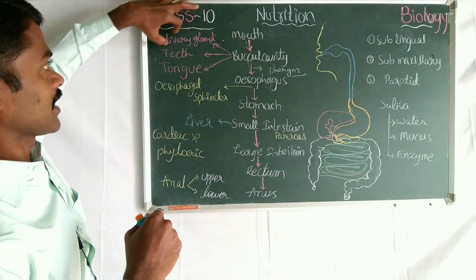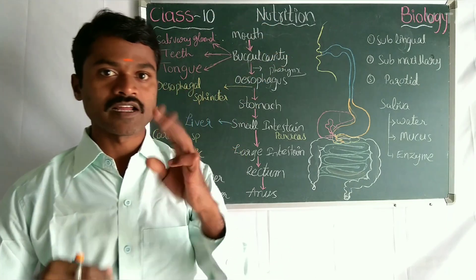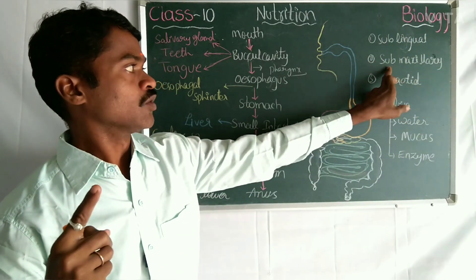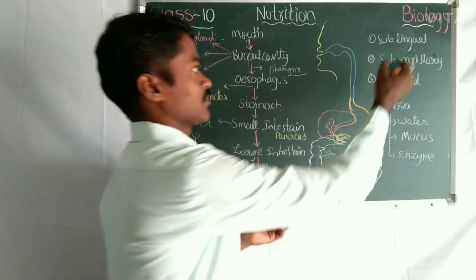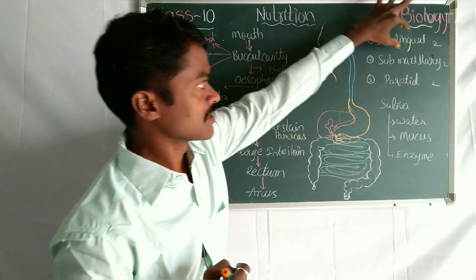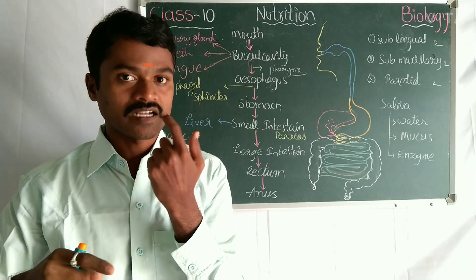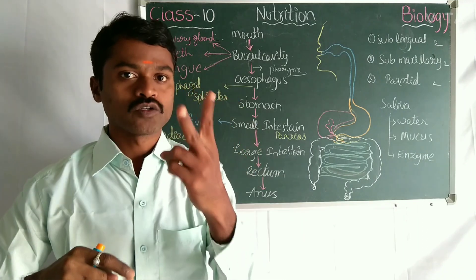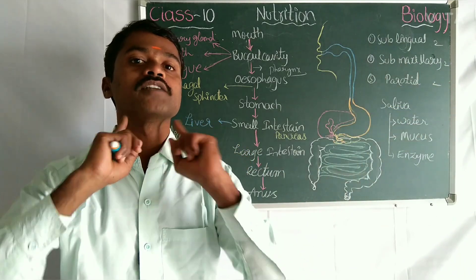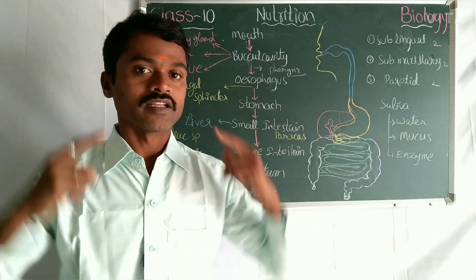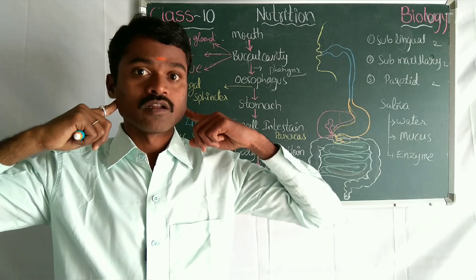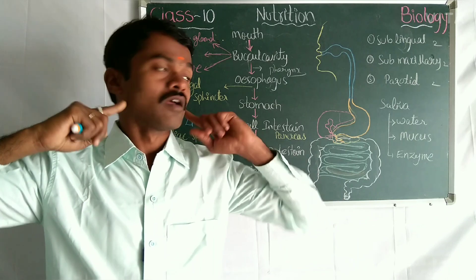In the buccal cavity we have salivary glands. There are three pairs of salivary glands: one, sublingual (below the tongue); two, sub-maxillary (below the jaw); and three, parotid (near the ear). Each pair has two glands. When the parotid glands are affected by a microorganism, we get mumps.